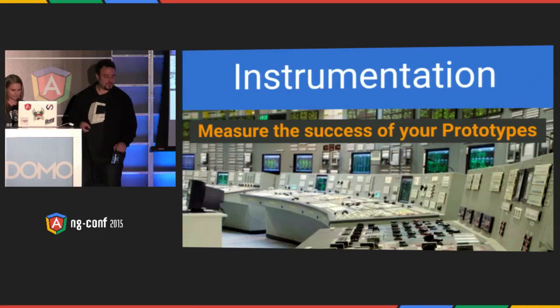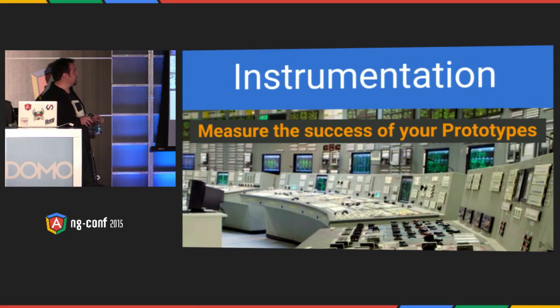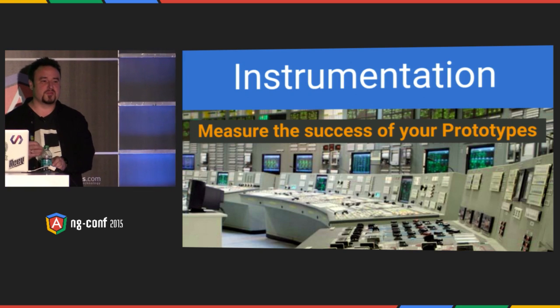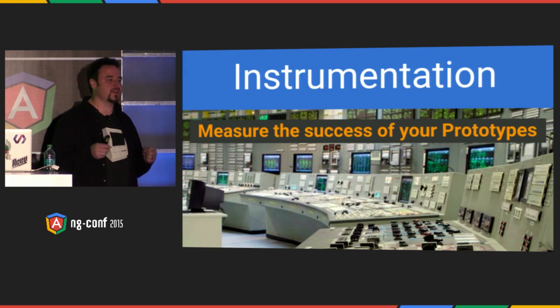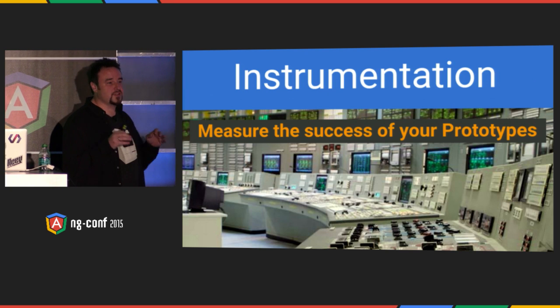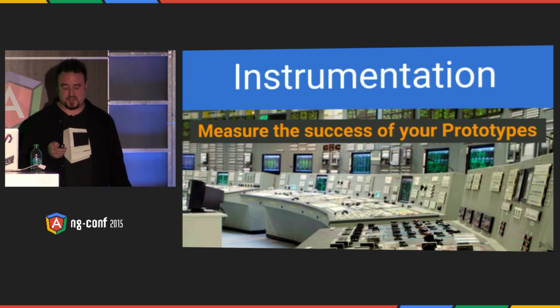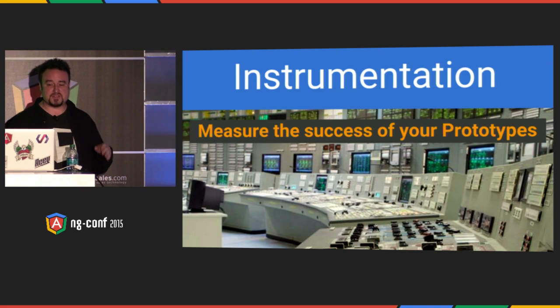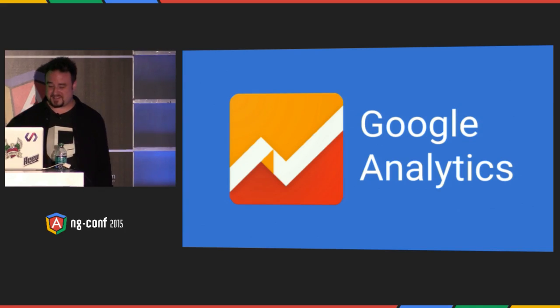Now we're going to get to the good stuff — I'm handing it off to Dirk, who's going to talk about analytics. We're going to start with the boring stuff, because one of the most under-known but most important things is: you're building a prototype and you want to know if it's successful. Usually you have more than one version and want to know which is best, so you have to measure this. No experiment is of any value without instrumentation. I'm slightly biased — I work for Google Analytics, so that's my tool of choice. I'm going to use a community-driven service called Angular Google Analytics that makes this really easy.